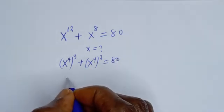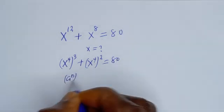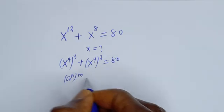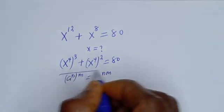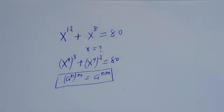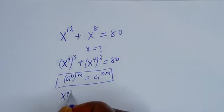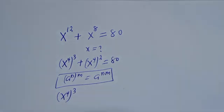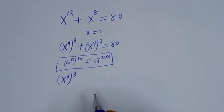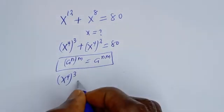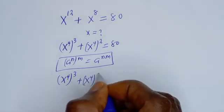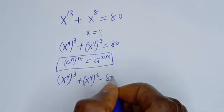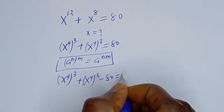That is, if you have S to the power of N to the power of M, this is equal to S to the power of N times M. Then this is S to the power of 4 to the power of 3, plus S to the power of 4 squared, minus 80 is equal to 0.